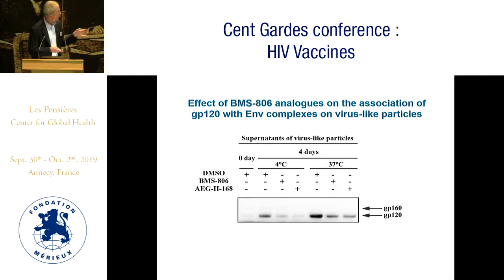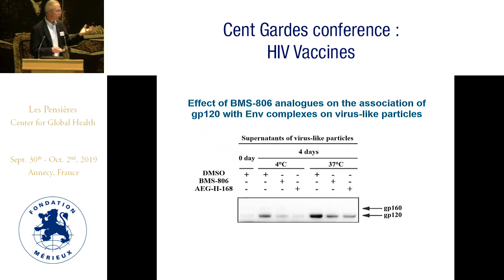Since those studies were done in detergent, we also asked whether BMS-806 strengthens the GP120-envelope interaction under physiological conditions. Taking virus-like particles and looking at GP120 shedding into supernatants: at day zero there's not much GP120 shed, but after four days in DMSO you can see GP120 gets shed. If we add BMS-806 or one of the analogs at various points, you can see that shedding is decreased — and that's true at both 4°C and 37°C.